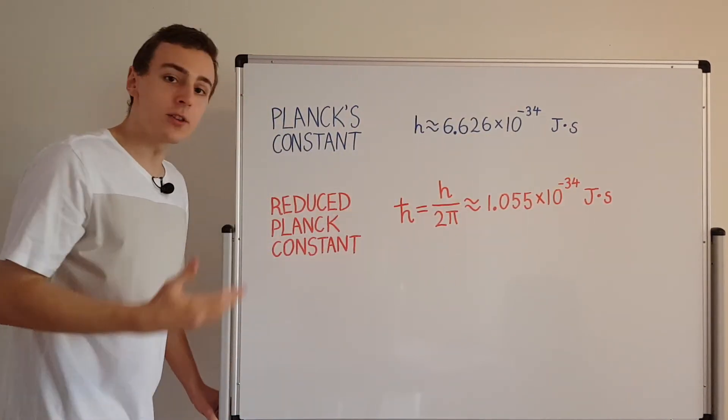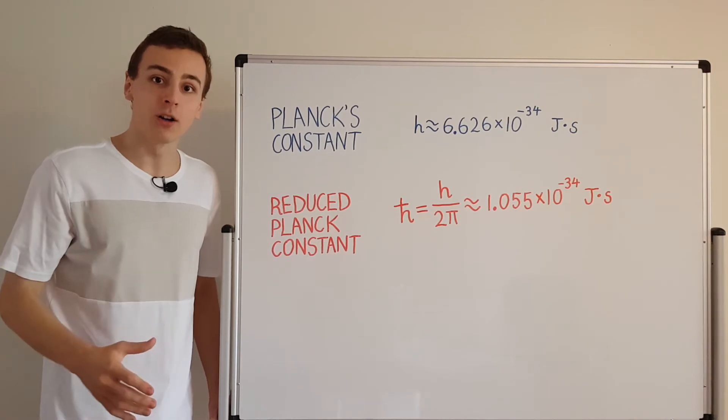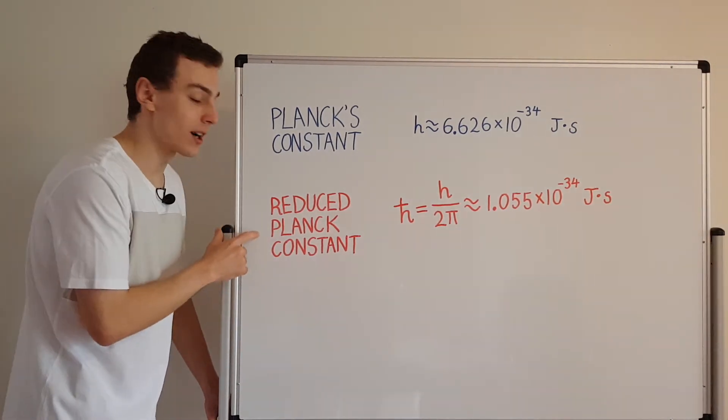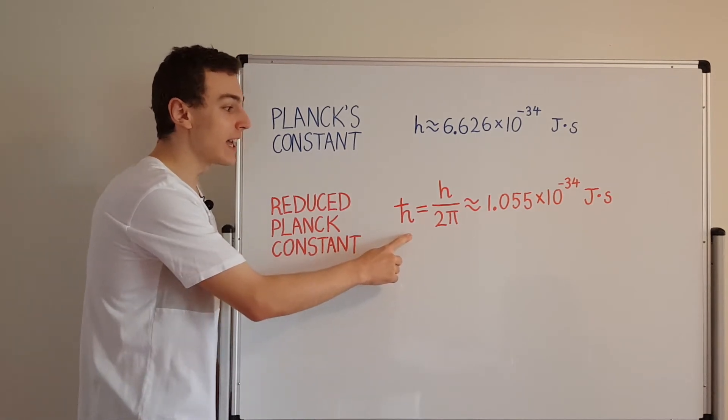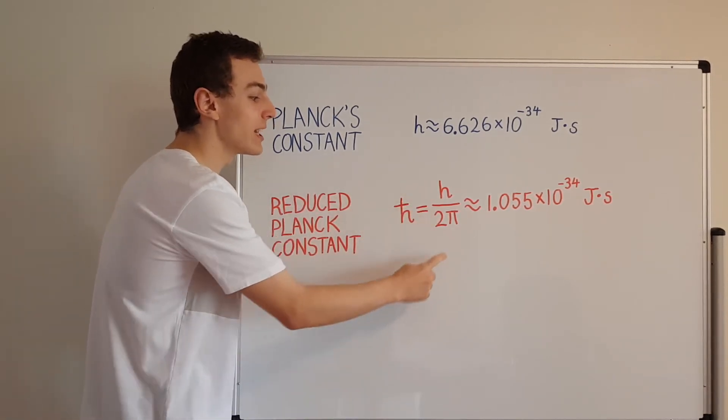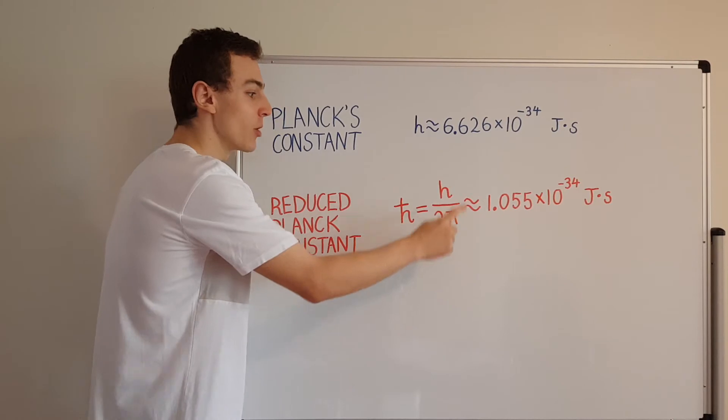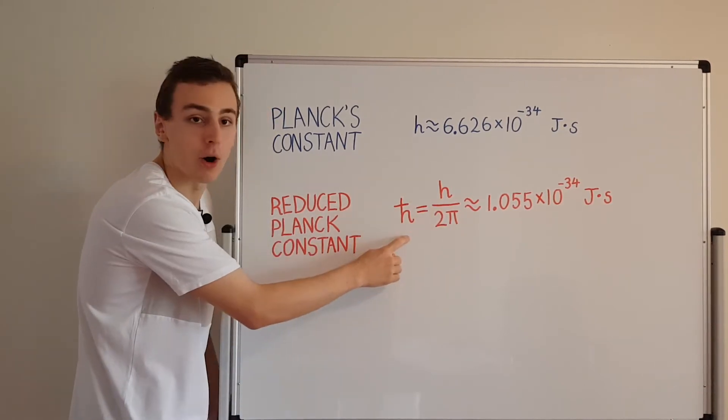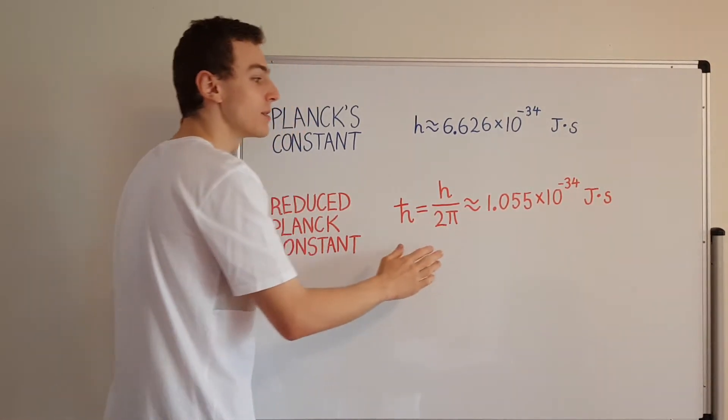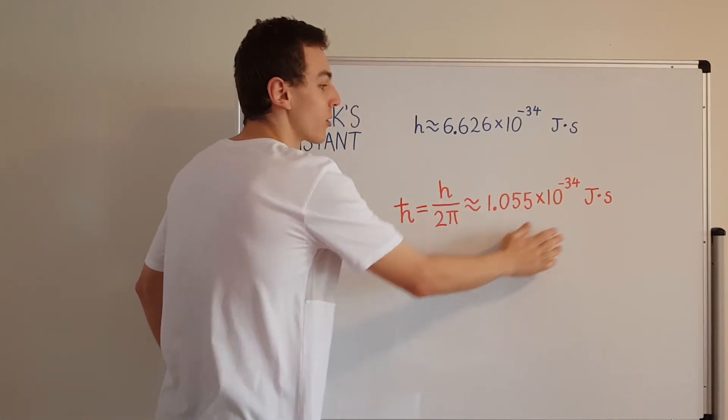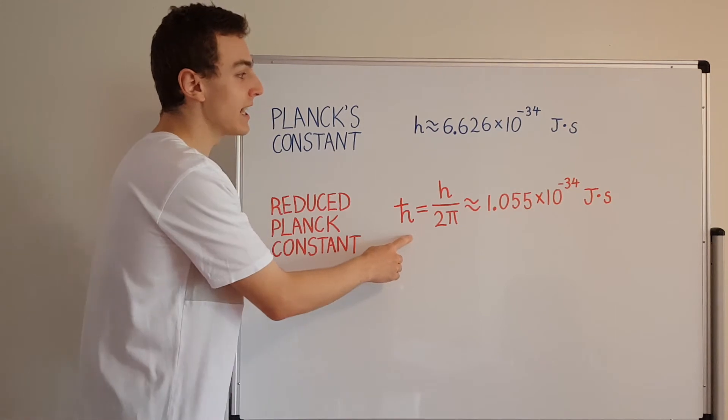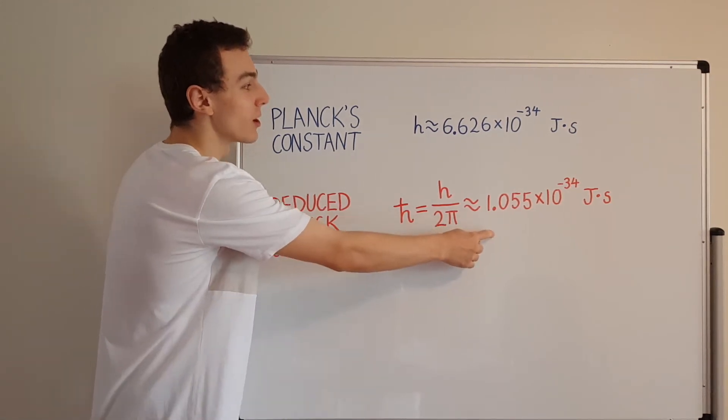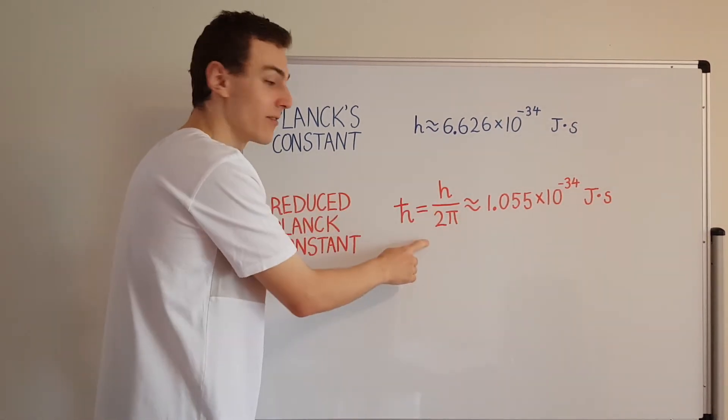We can also define another constant, h-bar, which is the reduced Planck constant. Now that's this guy over here. And h-bar is defined as h divided by 2π. So h over 2π, that's h-bar. And this guy is approximately this numerical value in the units of joule seconds. So h-bar is 2π times smaller than h. That's by definition.